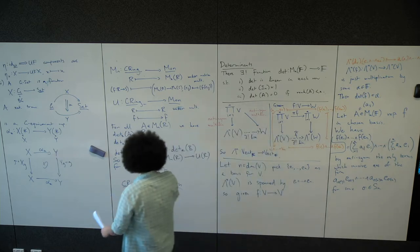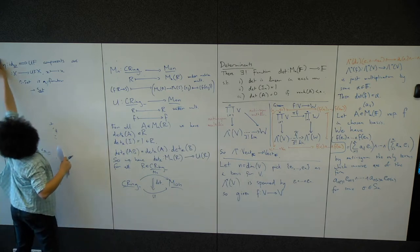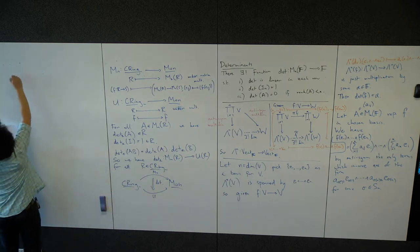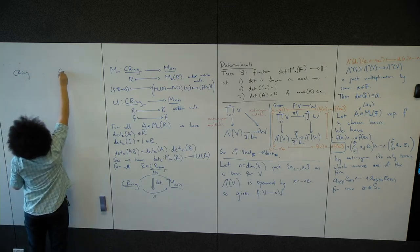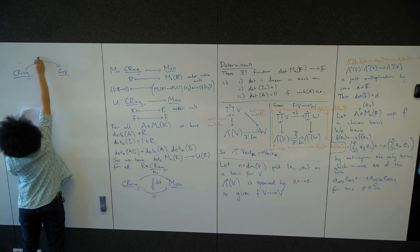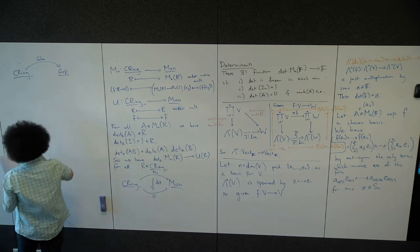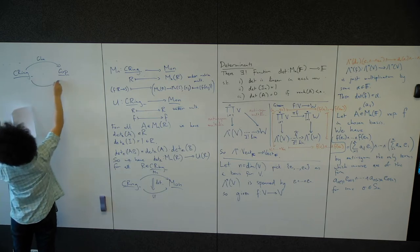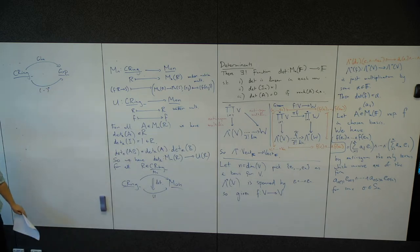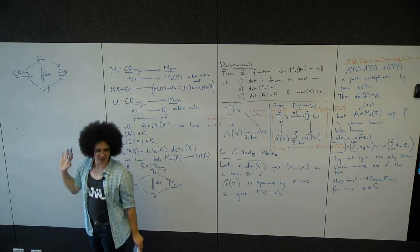This is also the same information as a natural transformation from CRing to Group, where instead of all matrices we use the general linear group functor (invertible matrices), and instead of the forgetful functor to monoids we use the functor taking a ring to its group of invertible elements. The same determinant components give a natural transformation between these two functors.